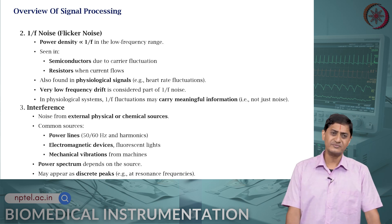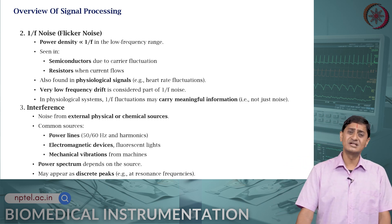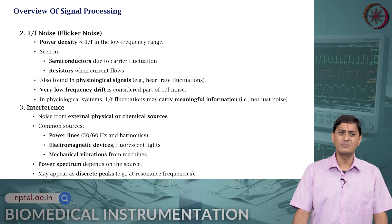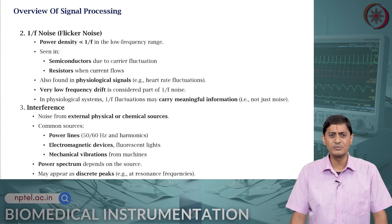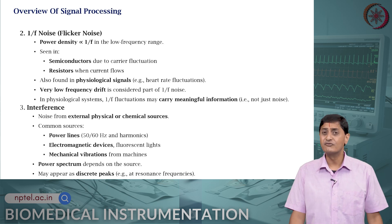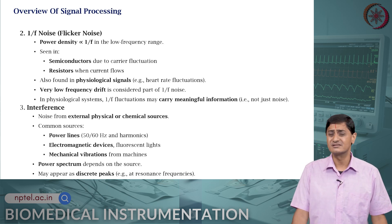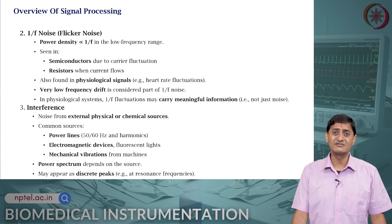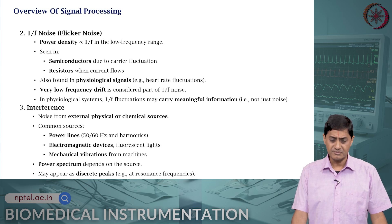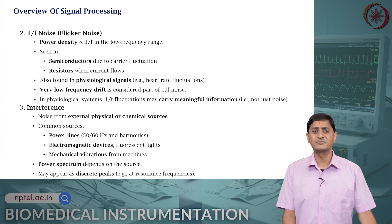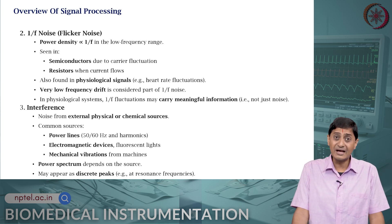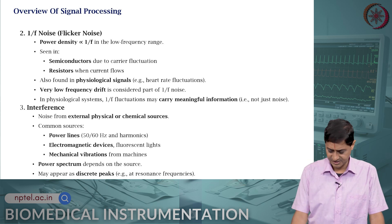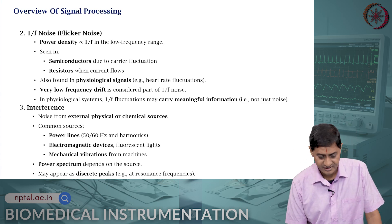Then there is interference — noise from external physical or chemical sources. Common sources are power line noise, electromagnetic devices such as fluorescent lights or other large electronic devices, and mechanical vibrations from nearby machines. The nature of the power spectrum depends on the source of the noise, and it might appear as discrete peaks, for example at resonant frequencies or their harmonics.